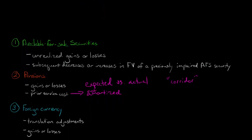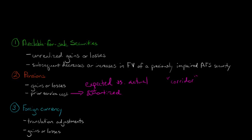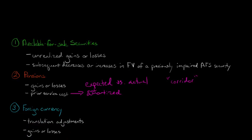Foreign currency transactions can also affect other comprehensive income. For example, with translation adjustments on an intra-entity — within-firm — foreign currency transaction that is of a long-term investment nature, those can flow through other comprehensive income. Also, a gain or loss on a foreign currency derivative that's a hedge of the foreign currency exposure of a net investment in a foreign operation — if your firm has an investment in a foreign company and they have a foreign currency hedge, then that's going to be booked to other comprehensive income as part of the cumulative currency translation adjustments made that period.